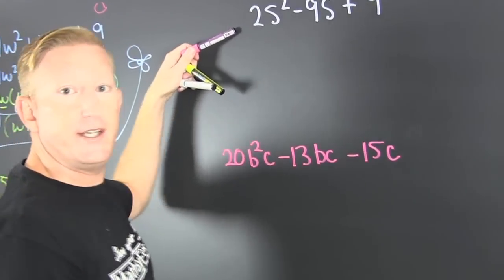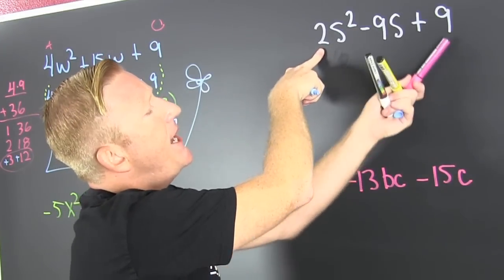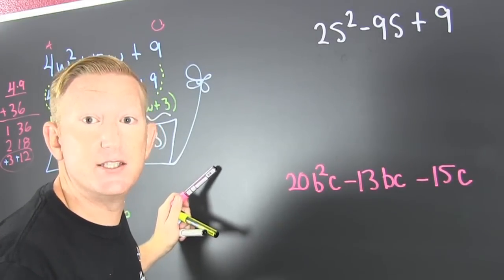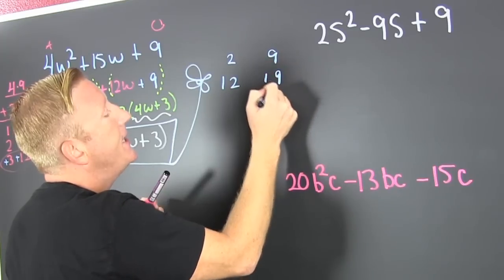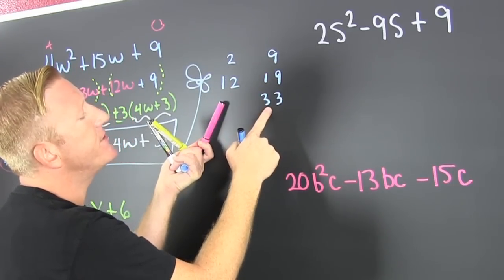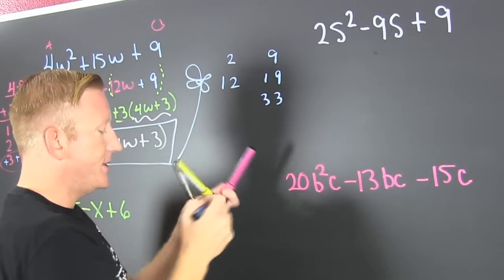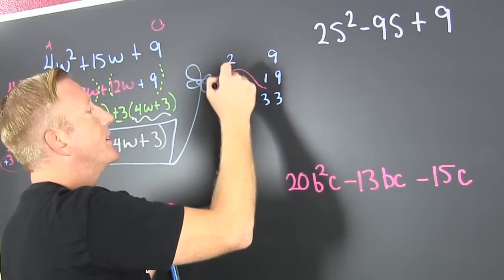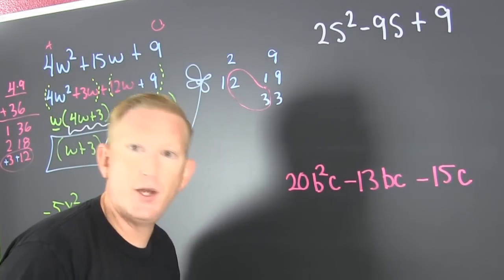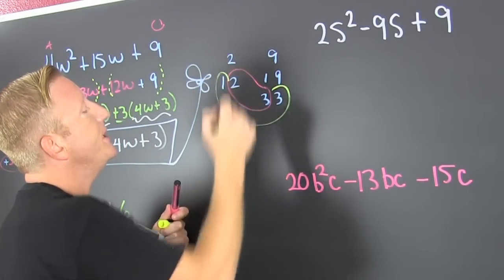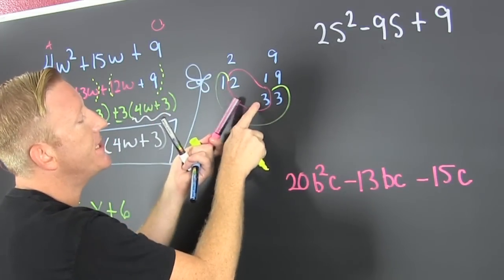Let's come on up to the next problem. I'm looking for the factors of 2 and 9. Let's use the guess and check method. If I had 2, that's 1 and 2. If I had 9, that's 1 and 9, and 3 and 3. We're looking for combinations of these that are going to add up to be 9. The AC method is going to work every time and requires no thinking — this method requires thinking. 6 plus 3 is 9.